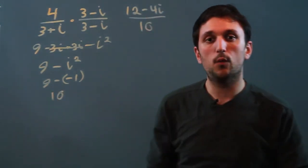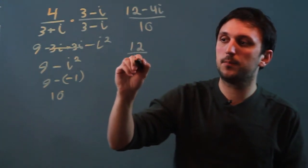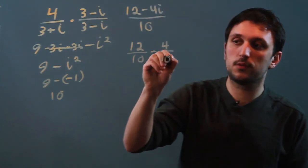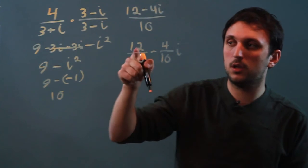12 minus 4i over 10. Which we can then simplify to 12 over 10 minus 4 tenths i. Which can then again be simplified because these are all even.